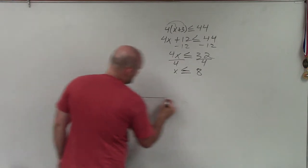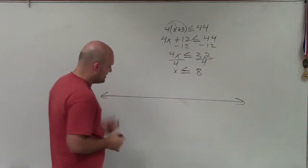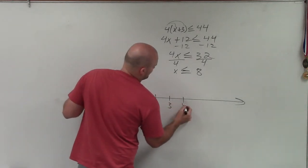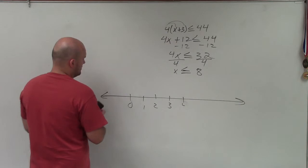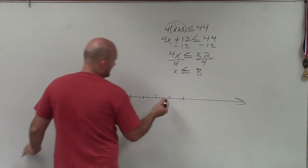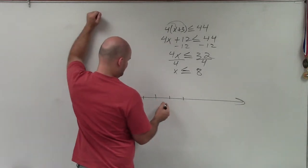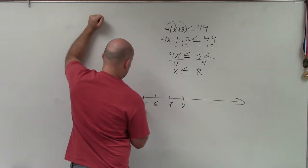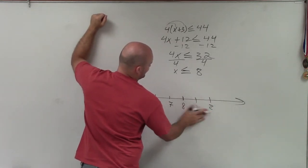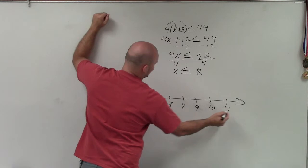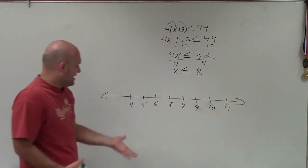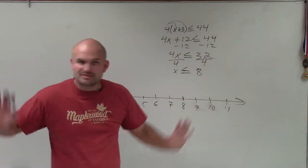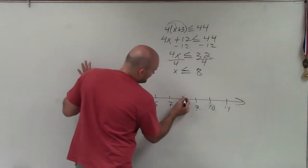Now, to graph my solution, I need to graph a number line. Let's start the number line at 8, and we'll do 7, 6, 5, 4, 3, then 9, 10, 11. So here's my number line — it's just a snippet; you can continue on however you want. You could start at 0 and go all the way up, go by 2's. The main important thing is we go to 8 and we look at 8.